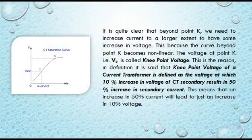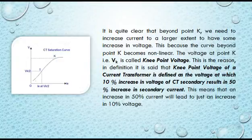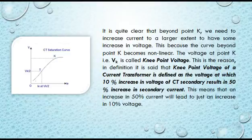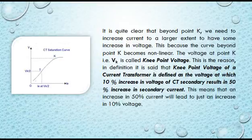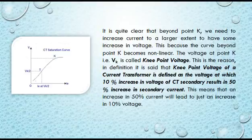Carefully observe the CT saturation curve. You can see that up to point K the curve is linear, while after K the curve becomes nonlinear. Beyond point K, we need to increase the current to a larger extent to achieve some increase in voltage. The voltage at point K is indicated as VK and is called the knee point voltage.